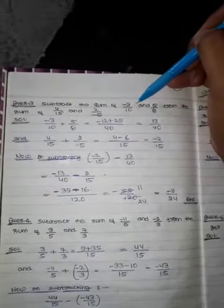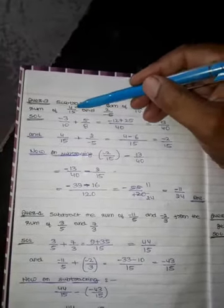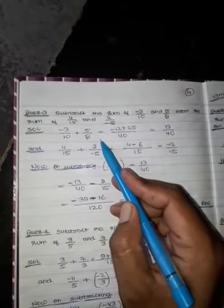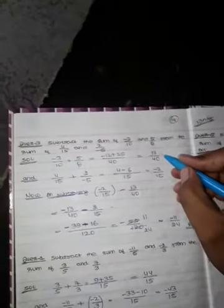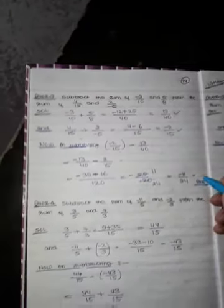Question number 3: subtract the sum of minus 3 upon 10 and 5 upon 8 from the sum of 4 upon 15. So we have to do this sum, which is equal to 30 upon 14. Then we have solved, which gives us minus. The difference is 11 upon minus 24.